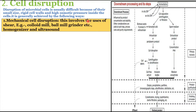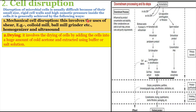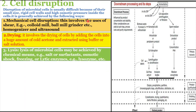Mechanical cell disruption involves the use of shearing — using a colloid mill, ball mill grinders, homogenizer, or ultracentrifugation — to lyse the cells and release the product. The second type is drying, which involves drying cells by adding cold acetone and then extracting using a buffer or salt solution. Lysis of microbial cells can also be achieved by chemical means: adding salts or surfactants, osmotic shock, freezing, or lytic enzymes such as lysozymes.